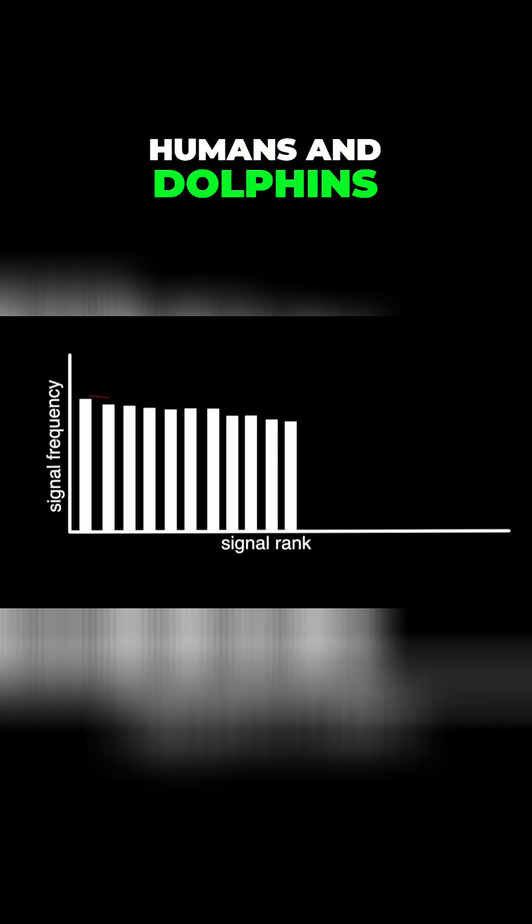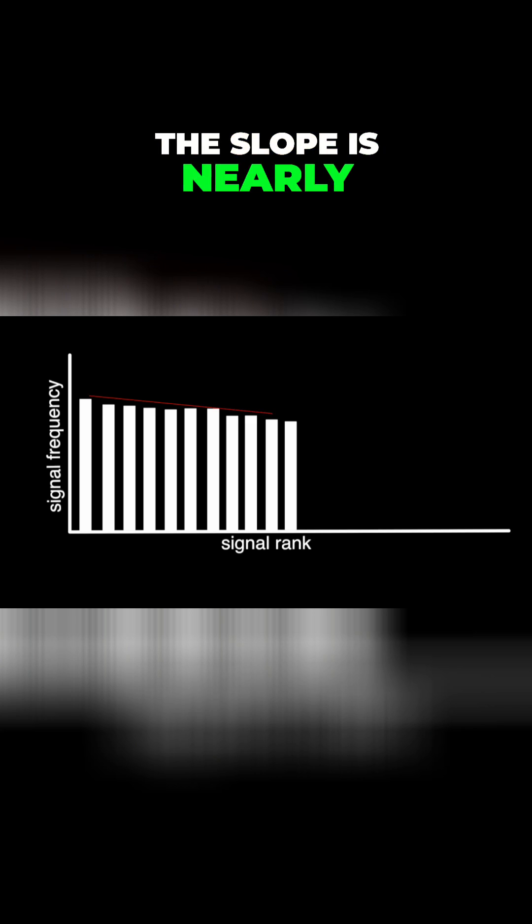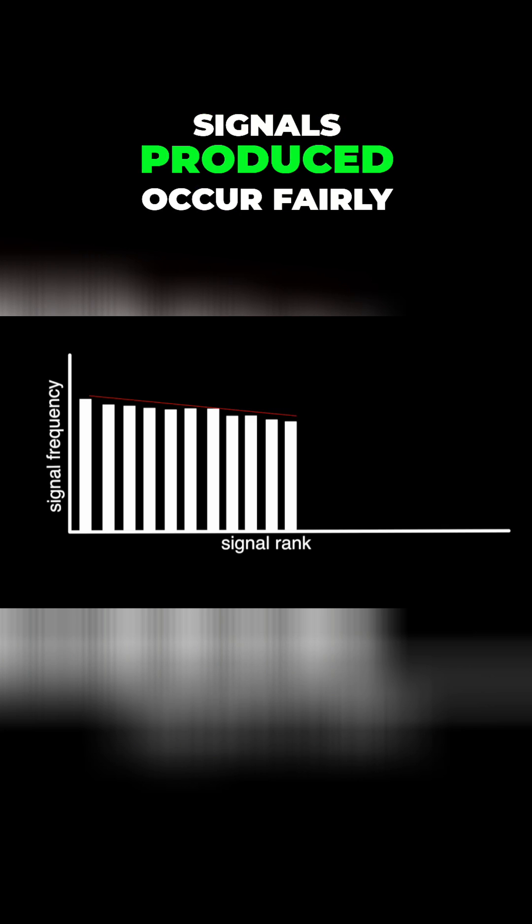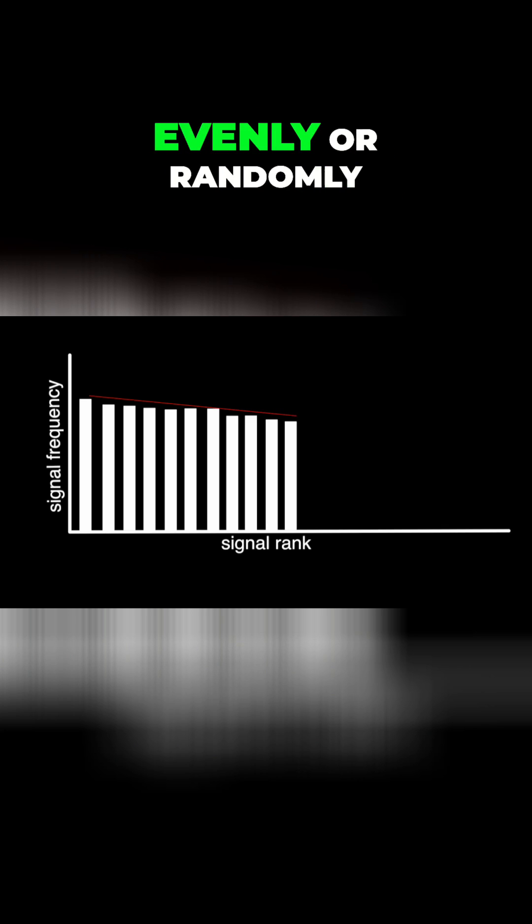They analyzed a long sequence of vocalizations from both adult and baby humans and dolphins. With human babies, the slope is nearly level as all sound signals produced occur fairly evenly or randomly.